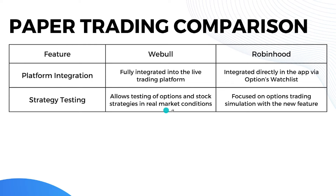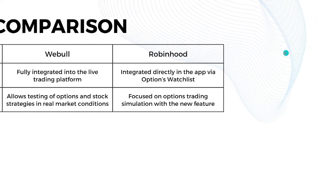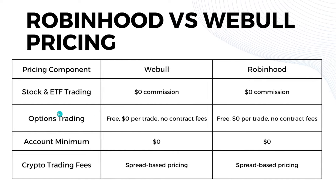For strategy testing, Webull allows testing of both options and stocks strategies in real market conditions. Robinhood's paper trading feature only focuses on options trading simulation — they don't include stocks. That's it for the paper trading comparison.